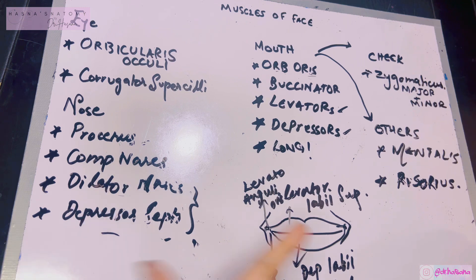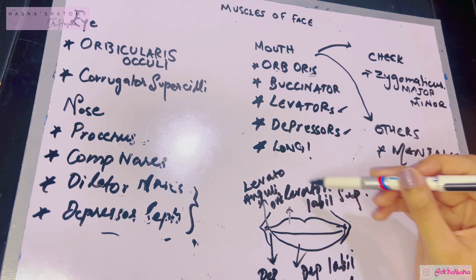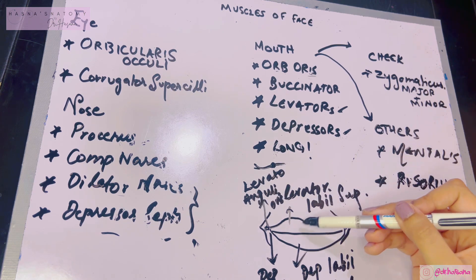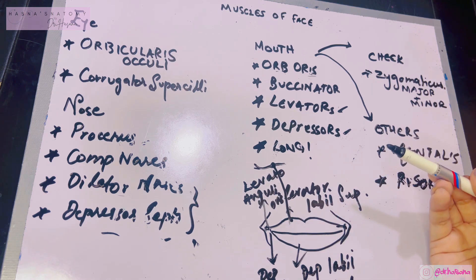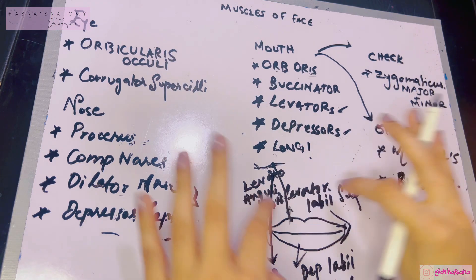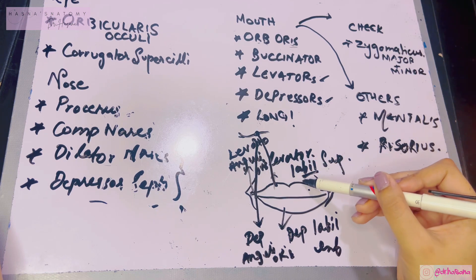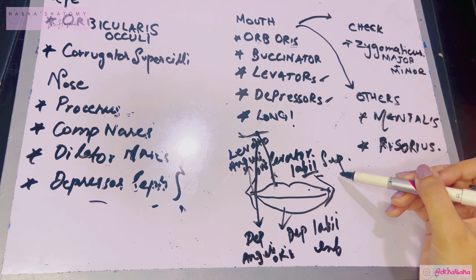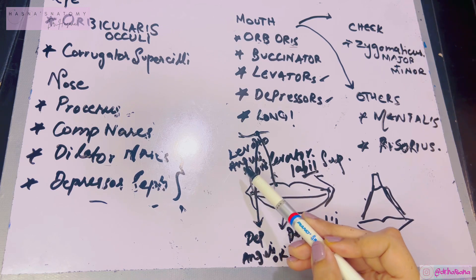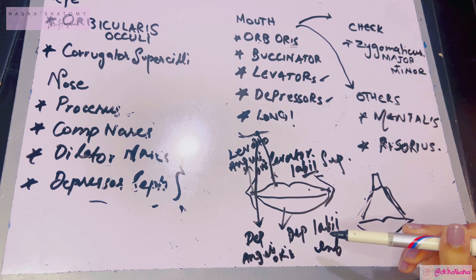The levator labii superioris comes from the infraorbital margin of the maxilla and gets attached to the upper lip to carry out its action. The levator anguli oris also comes from the maxilla and inserts into the angle of the mouth. Their actions are exactly as their names suggest: levator labii superioris causes elevation of the upper lip and also forms the nasolabial fold. The levator anguli oris causes elevation of the angle of the mouth and also forms the nasolabial groove.